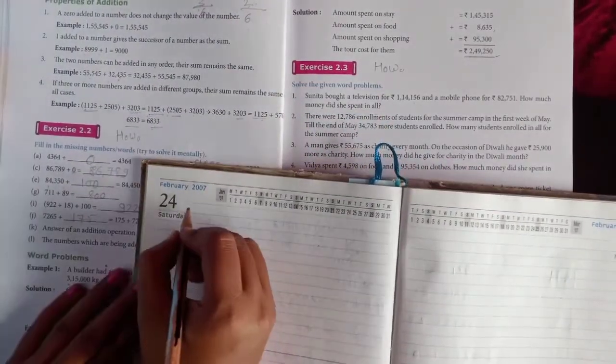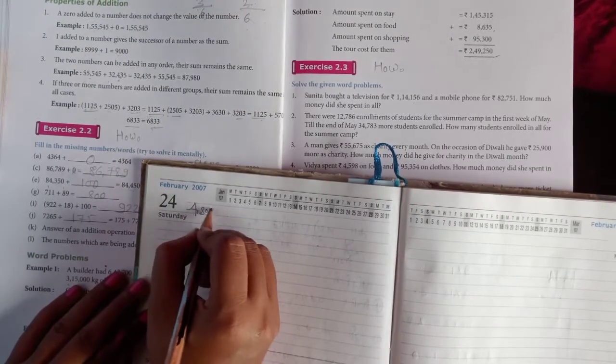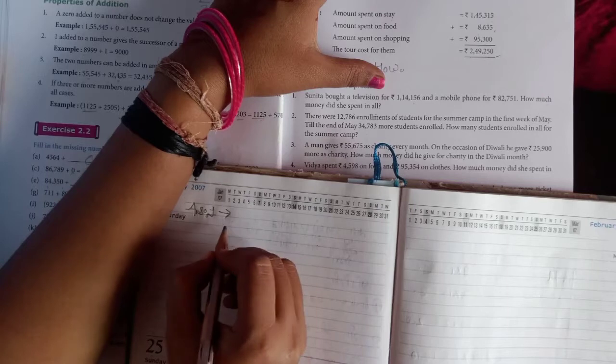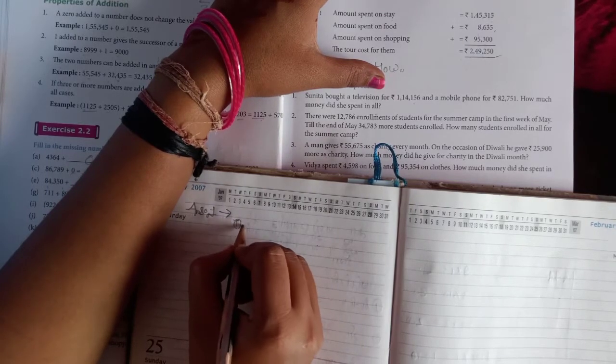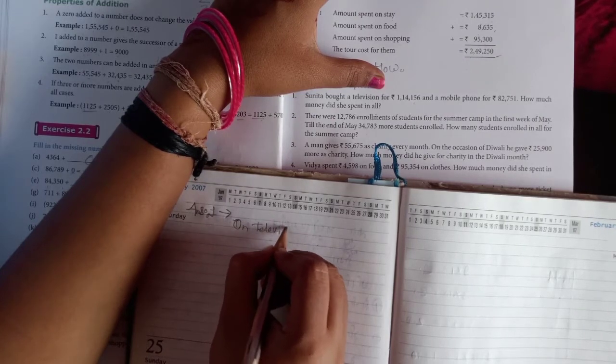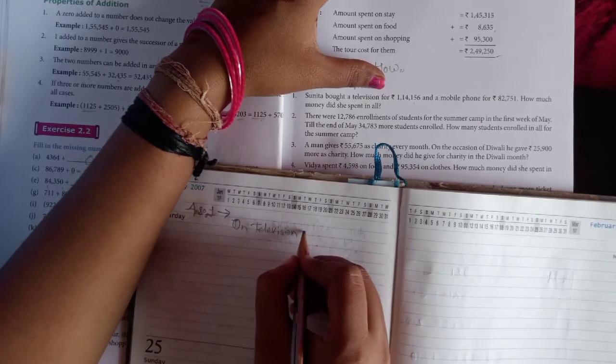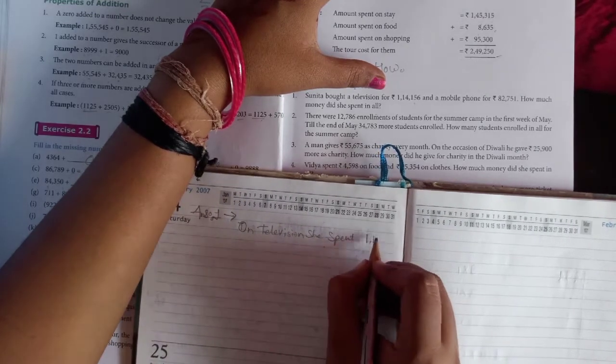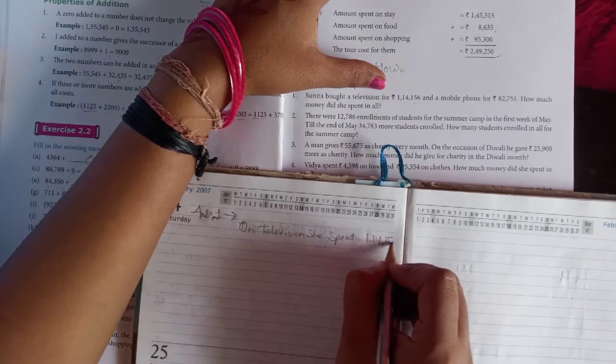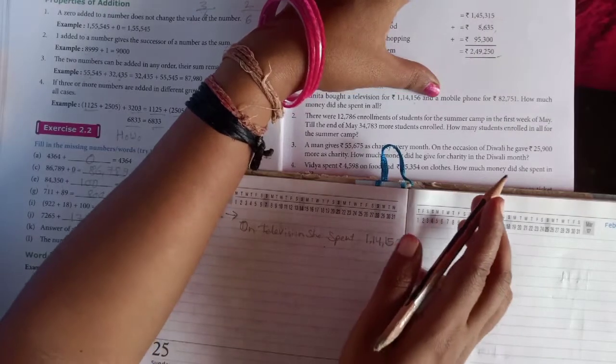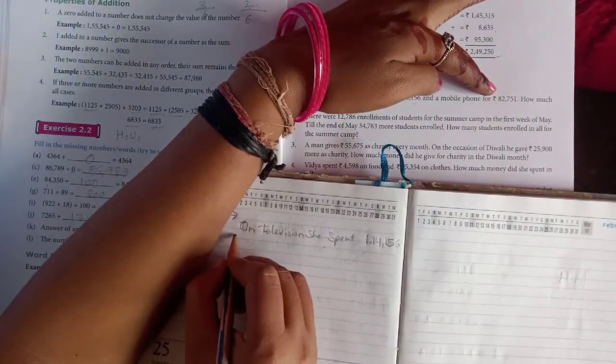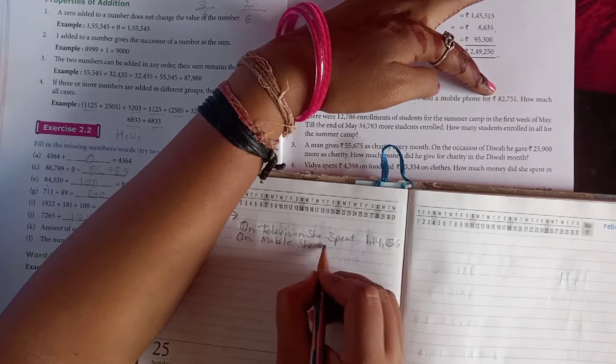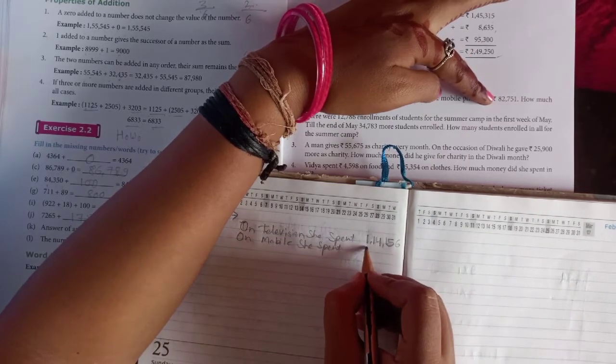Sunita brought a television, so in television she spent 114,156 rupees. And on mobile phone she spent 82,751.